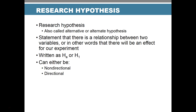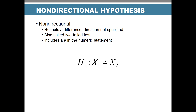The alternative hypothesis can be either non-directional or directional. Non-directional means we expect a difference but don't specify which direction — we just think the groups won't be equal. This is also called a two-tail test, because we're looking for effects in both tails of the normal distribution — both greater than and less than. We include a 'not equal to' sign in our statement.